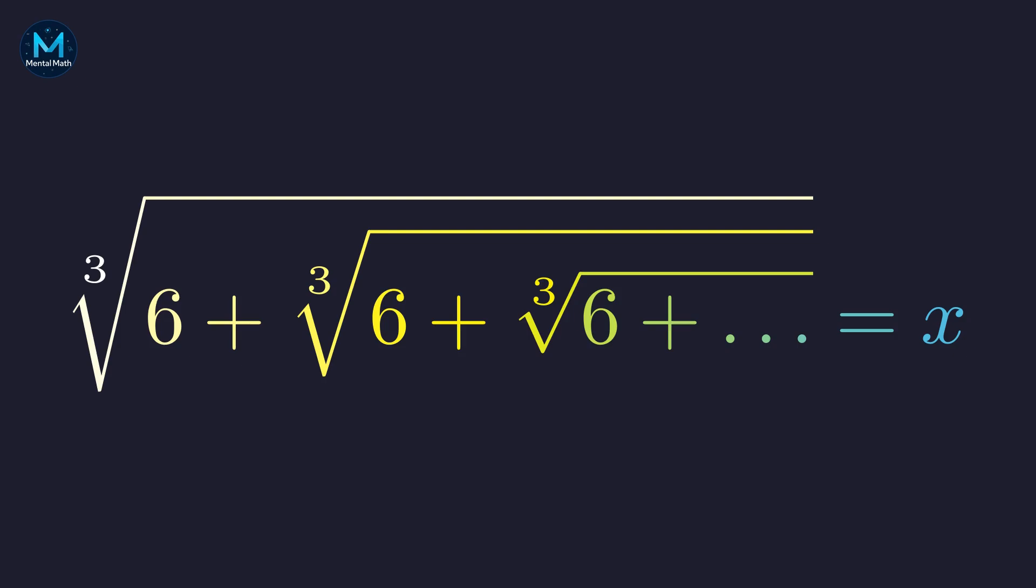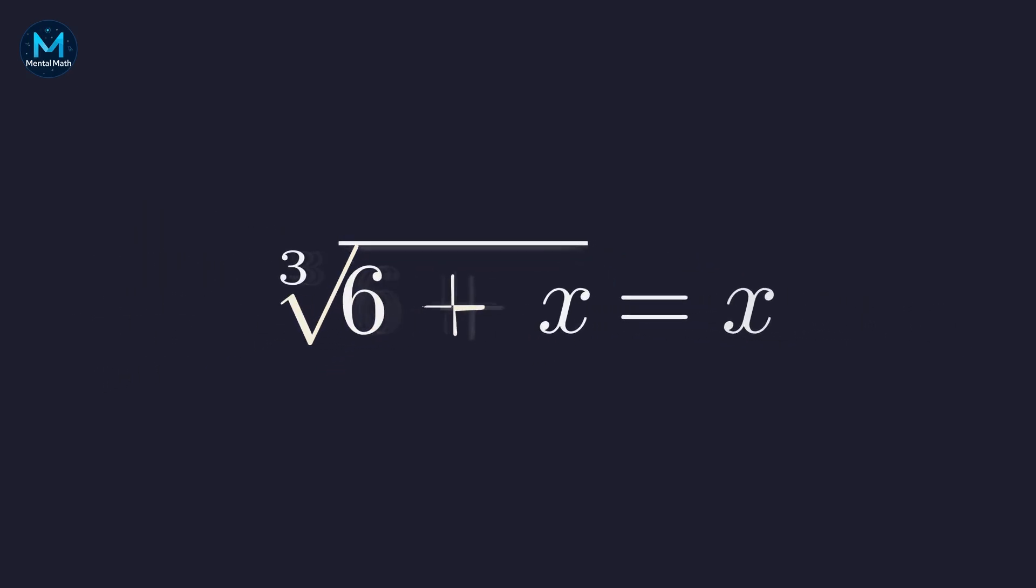How do we solve something infinite? The key, as with many infinite structures, is recognizing self-similarity. Look inside the first cube root. That entire nested expression is identical to the whole thing. Since the whole expression equals x, we can substitute x back into itself.